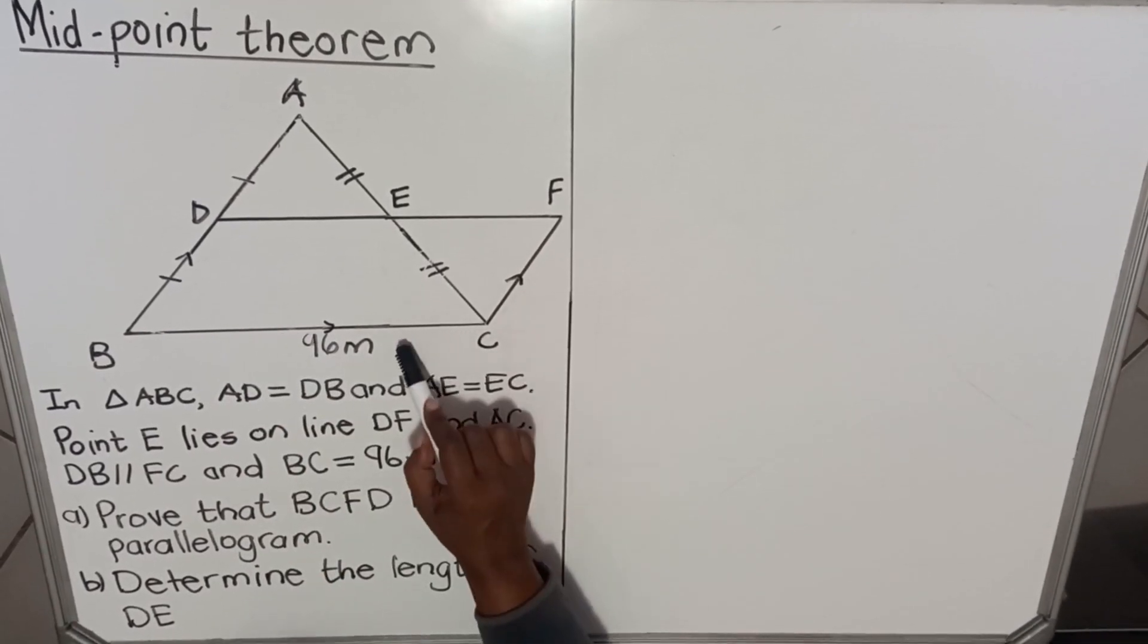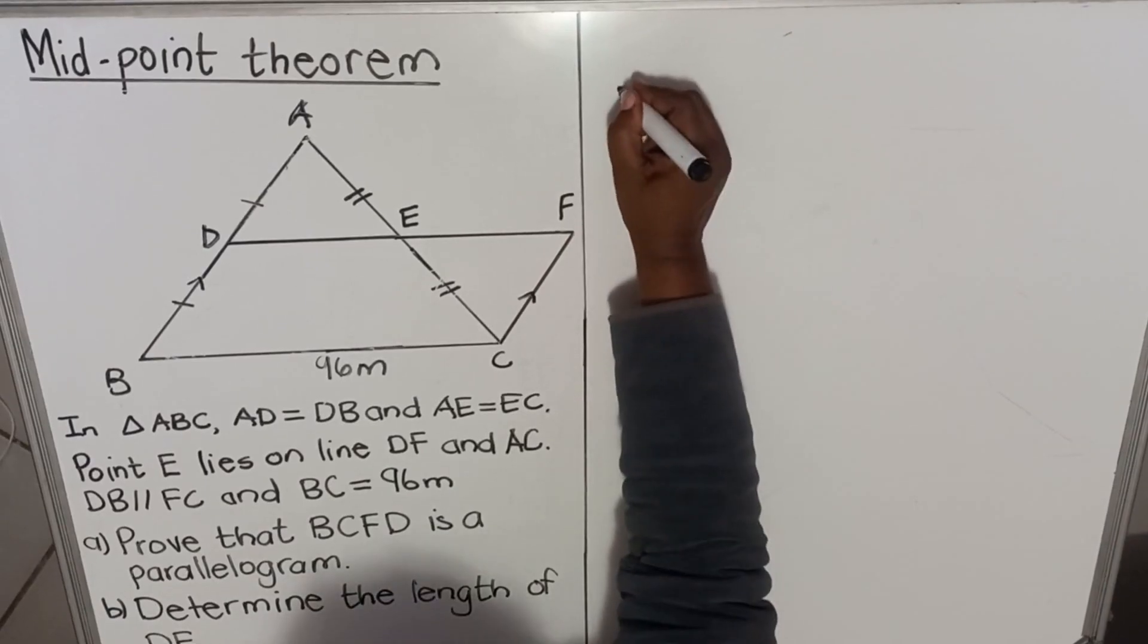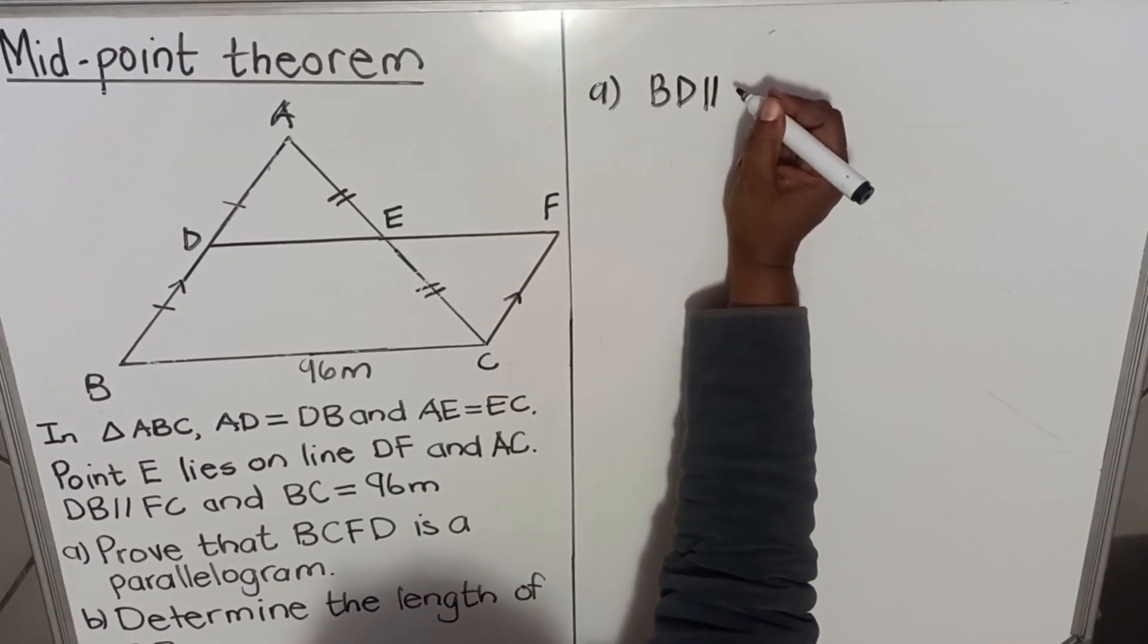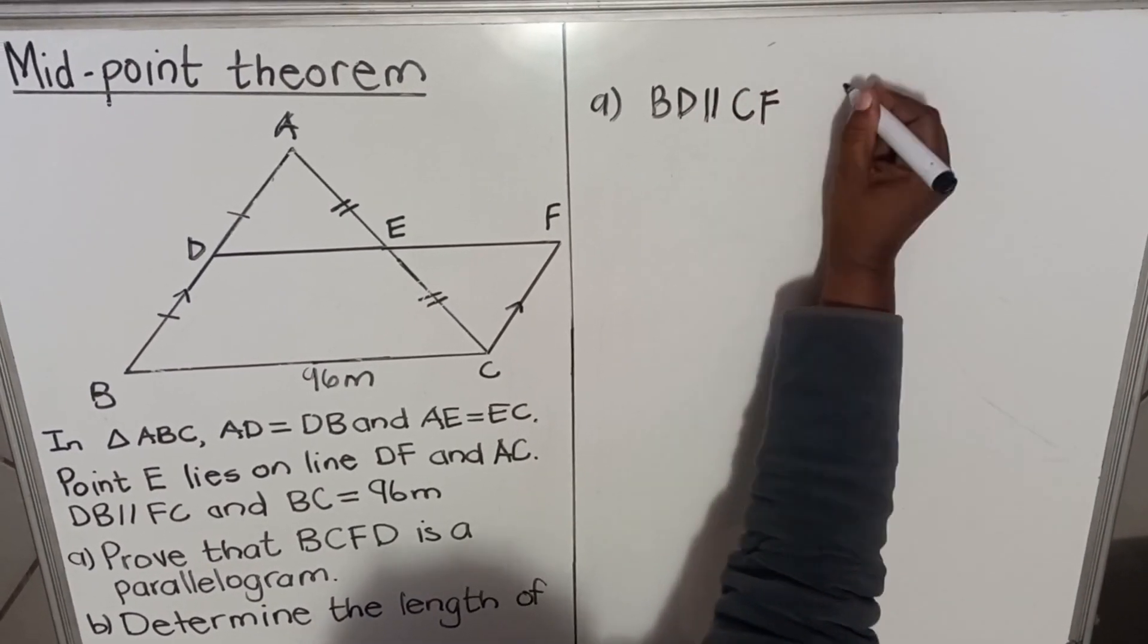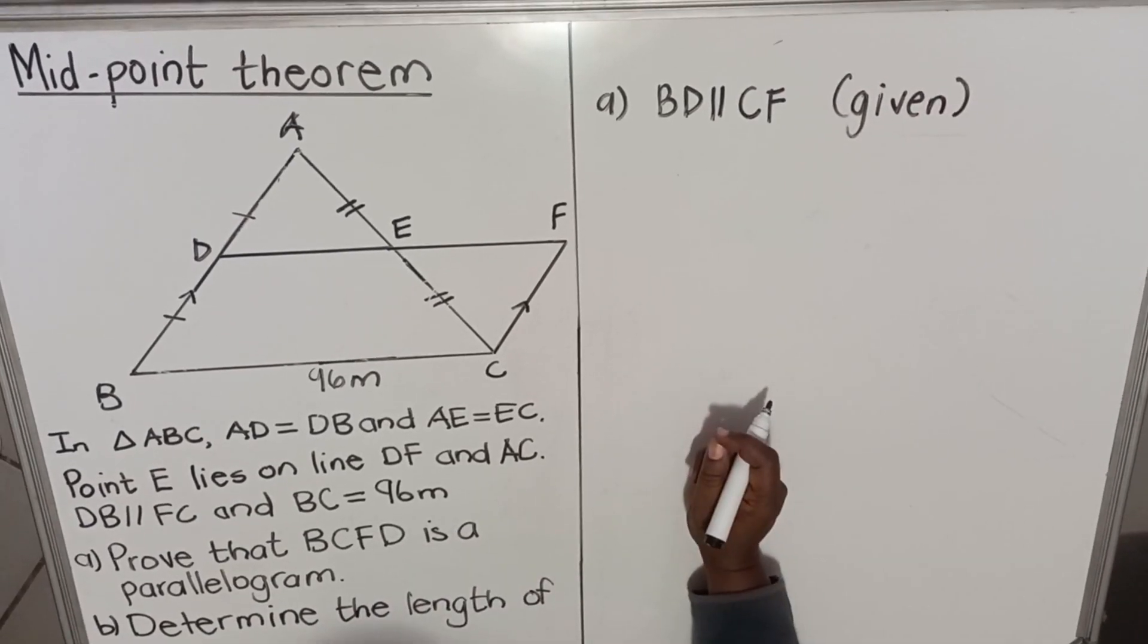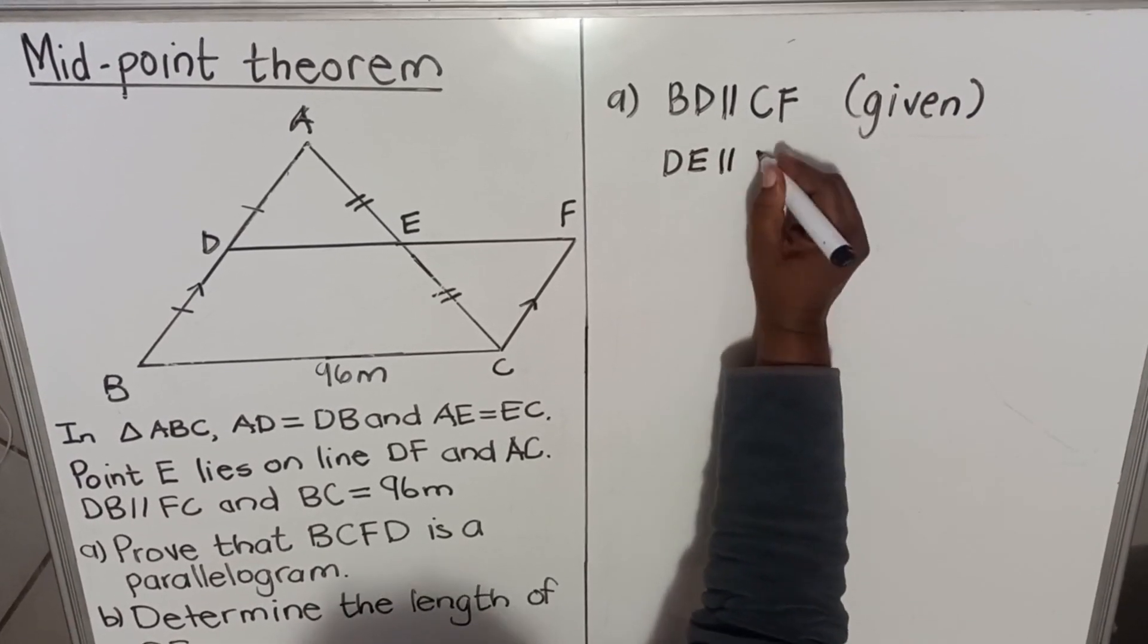So if this side and that side are parallel, and that side and that side are parallel, then this whole thing is a parallelogram. We have BD parallel to CF, and the reason is given. Now we also have DE parallel to BC.